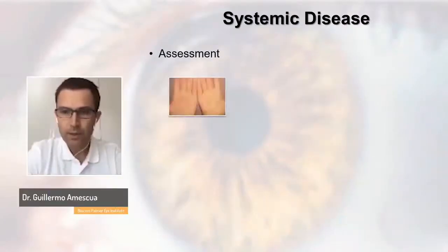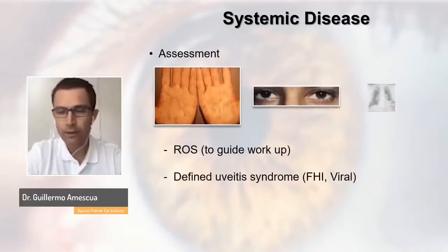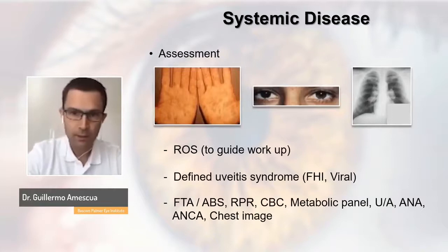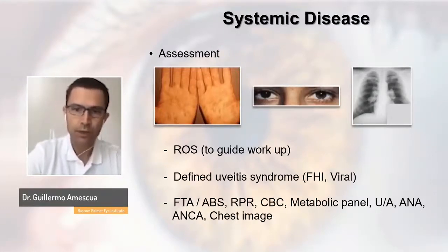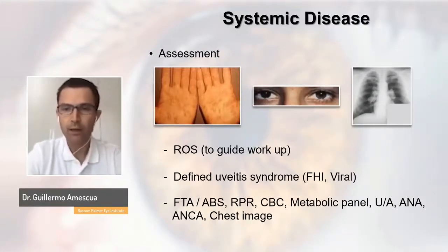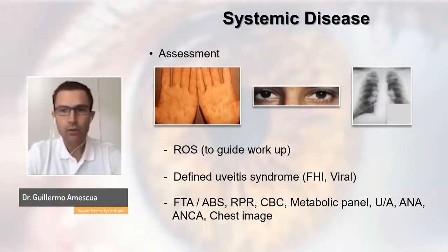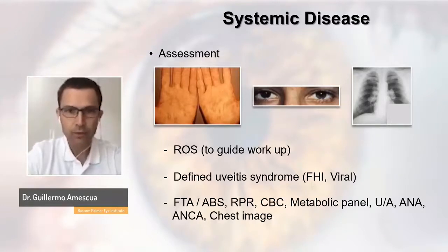Always do a review of systems. Make sure you have a defined syndrome — it's very different to have Fuchs heterochromic iridocyclitis versus herpetic trabeculitis or iritis. Order the right labs and have the correct diagnosis.